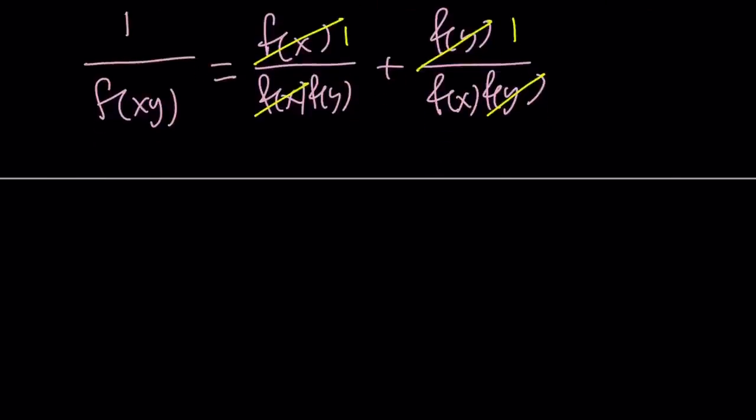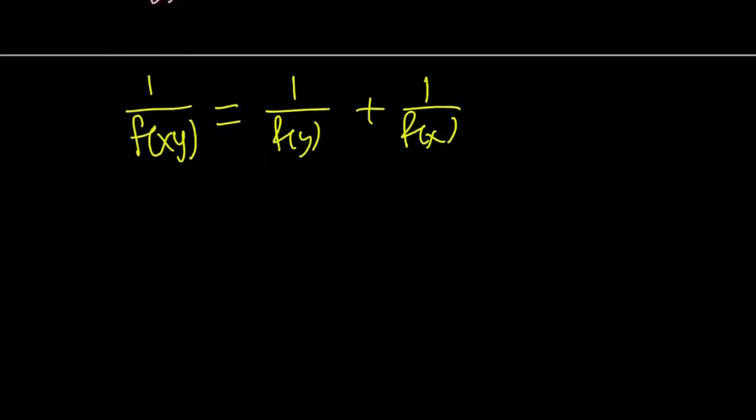So now we get the following. One over f of xy equals one over f of y plus one over f of x. At this point, this should look familiar to you, but it's just reciprocals.